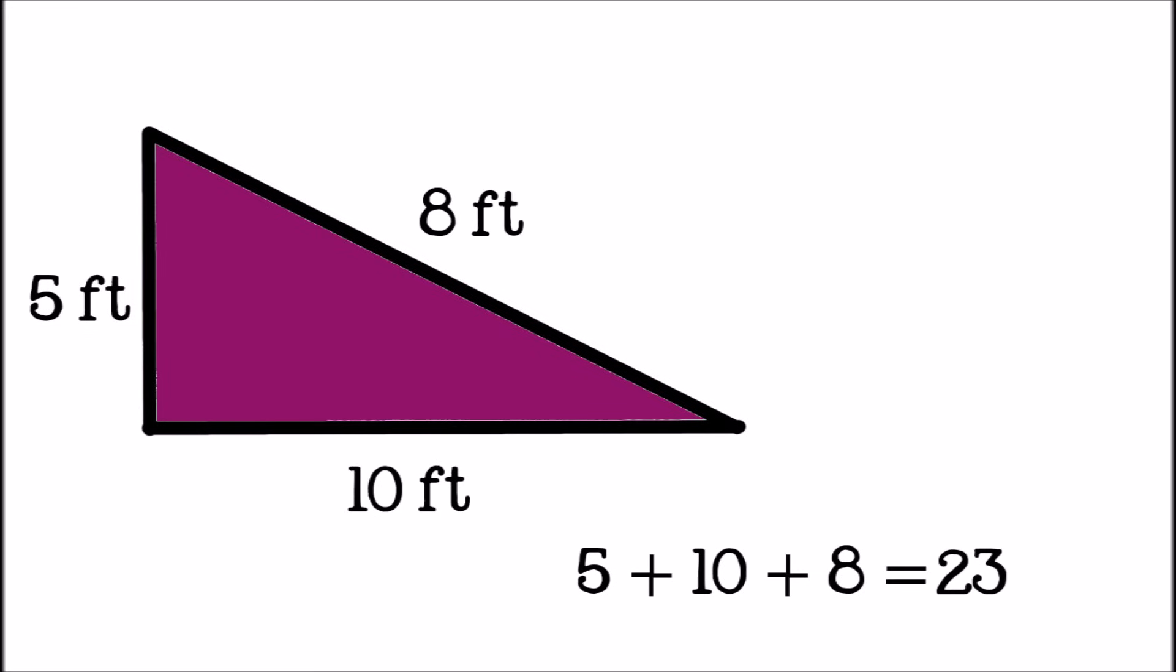Twenty-three isn't the answer though. We need to add the units, feet in this case, so we know how long the perimeter is. The perimeter of this triangle is twenty-three feet. That was pretty easy, right? Let's try another shape.